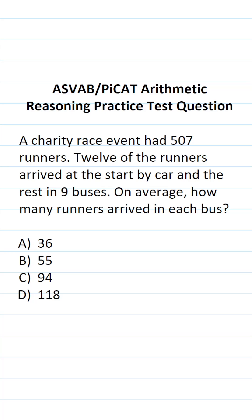This arithmetic reasoning practice test question for the ASVAB and PyKet says a charity race event had 507 runners. 12 of the runners arrived at the start by car and the rest in nine buses. On average, how many runners arrived in each bus?